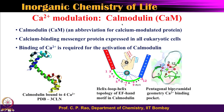Now let us look at calcium modulation. Calmodulin — cal and modulin — means modulation of calcium, a calcium-modulated protein. It is a calcium binding messenger protein expressed in all eukaryotic cells. Binding of calcium 2+ is required for activation of calmodulin — this is important.